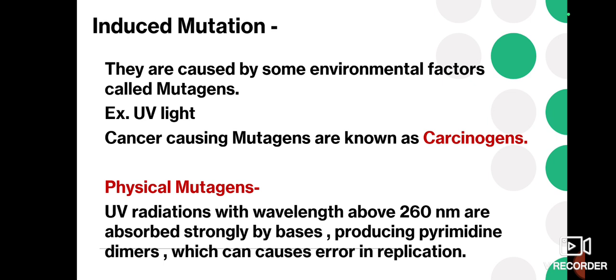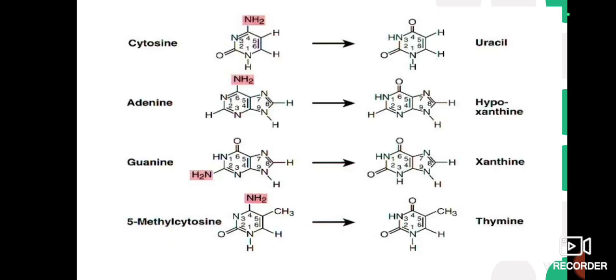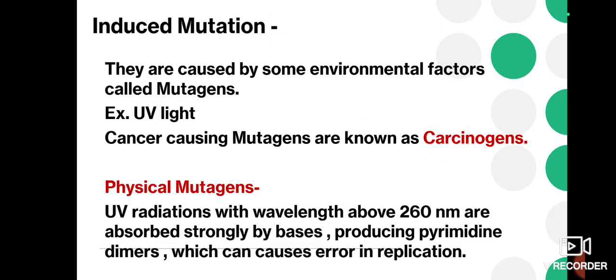If UV radiation is above 260 nanometers, it can strongly affect the structure of DNA and nucleic acid. The bases present in the form of purines and pyrimidines can be seriously affected, causing a serious kind of mutation. These are examples of physical mutagens.